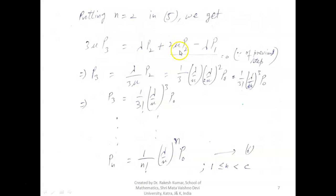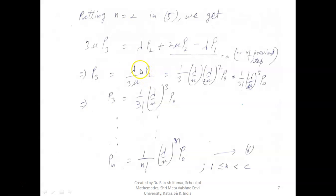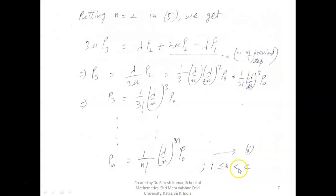Putting the value of p_1, we get p_2 equals (1/2!)(lambda/mu)^2 * p_0. Then putting n=2 in equation 5, we get 3*mu*p_3 equals lambda*p_2 plus 2*mu*p_2 minus lambda*p_1. Since 2*mu*p_2 minus lambda*p_1 equals 0, we are left with 3*mu*p_3 equals lambda*p_2. Therefore p_3 equals (1/3!)(lambda/mu)^3 * p_0. Continuing in the same way, p_n equals (1/n!)(lambda/mu)^n * p_0, for 1 ≤ n < c.